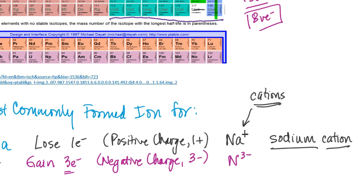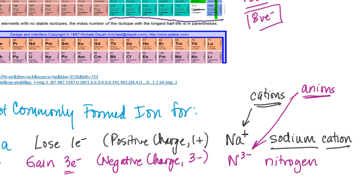To name a negative ion — and these are called anions — start with the element name, nitrogen, chop off the ending, and add the suffix -ide. So this ion would be called the nitride anion.